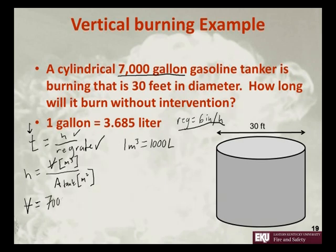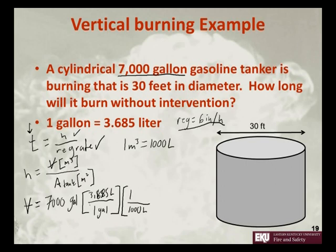We say we have 7,000 gallons. We know that one gallon is 3.685 liters. There are 1,000 liters in 1 meter cubed. So this will tell us how many meters cubed of gasoline we have. So we take 7,000 times 3.685 divided by 1,000, and we get 25.8 meters cubed of gasoline. So let's write that down again. We have our volume is equal to 25.8 meters cubed.